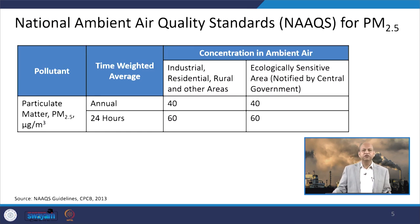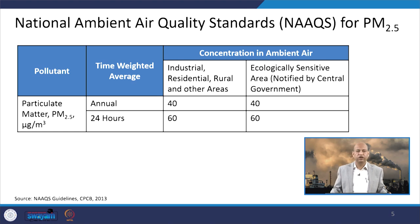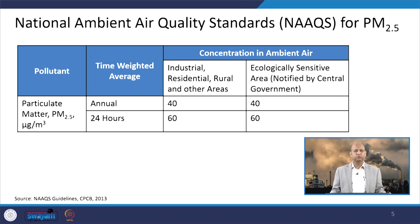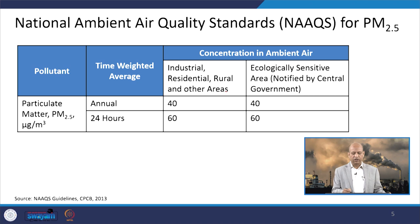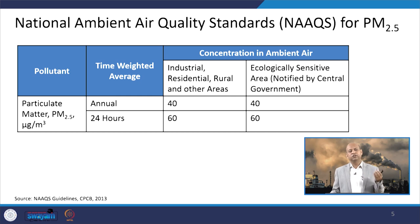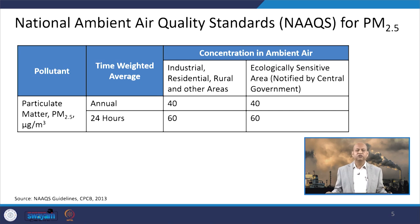If we talk about National Ambient Air Quality Standards — NAAQS — for PM 2.5 prescribed by CPCB, the Central Pollution Control Board: for industrial, residential, rural, and other areas, the annual average is 40 micrograms per cubic meter and the 24-hour average is 60 micrograms per cubic meter. The same quantities apply for ecologically sensitive areas notified by the central government.